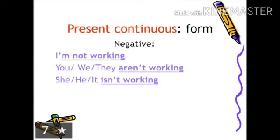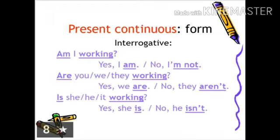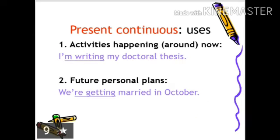Structure of negative sentence: I am not working; you/we/they are not working; he/she isn't working. Structure of interrogative sentence: am/is/are plus subject plus verb with -ing. Present continuous tense is used to describe activities happening around us now, for example, I am writing my doctoral thesis. Also for future personal plans, for example, we are getting married in October.